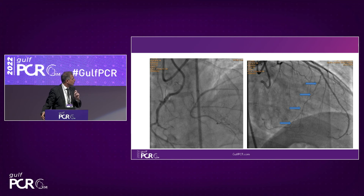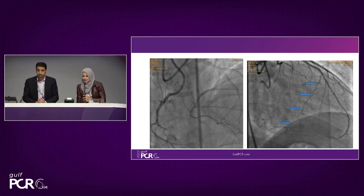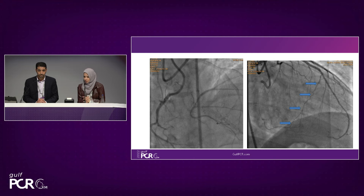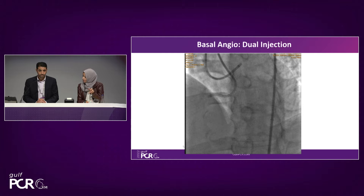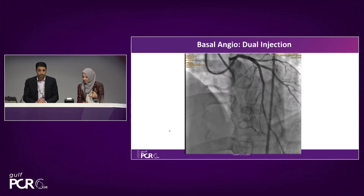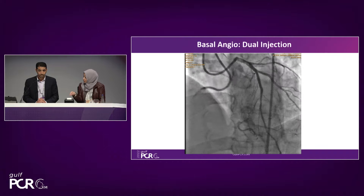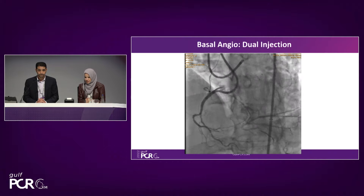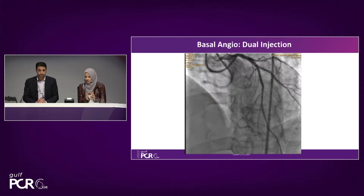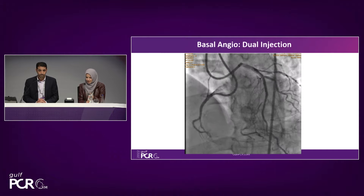The right coronary moves a lot more than the left system when you're working on it. If you're going antegrade through the right, it's very tempting to keep injecting to get visibility, as opposed to going retrograde from the left. Even in non-CTO cases, the movement of the right coronary makes it very difficult to follow.